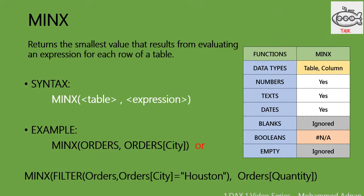MINX returns the smallest value that results from evaluating an expression for each row in a table. The syntax is MINX with a table and an expression. For example: MINX, Orders as table name, and Orders City as column name. You can also use it in an advanced way — for example, MINX with a FILTER on the Orders table where City equals 'Hostel', to find the minimum order quantity inside that city. This is a bit more advanced compared to MIN and MINA. Numbers, text, and dates are accepted; blanks and empty rows are ignored; booleans are not accepted.